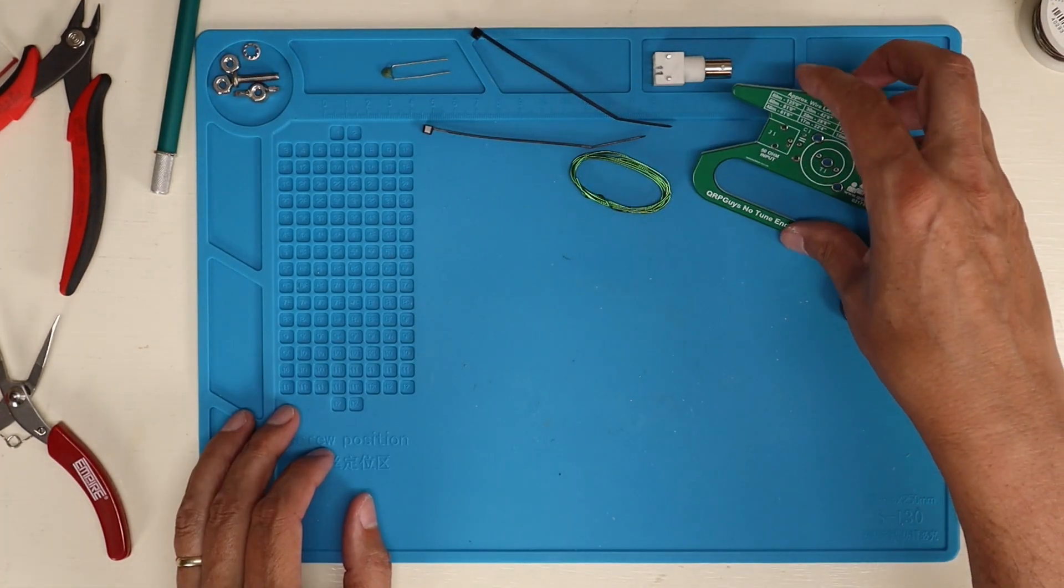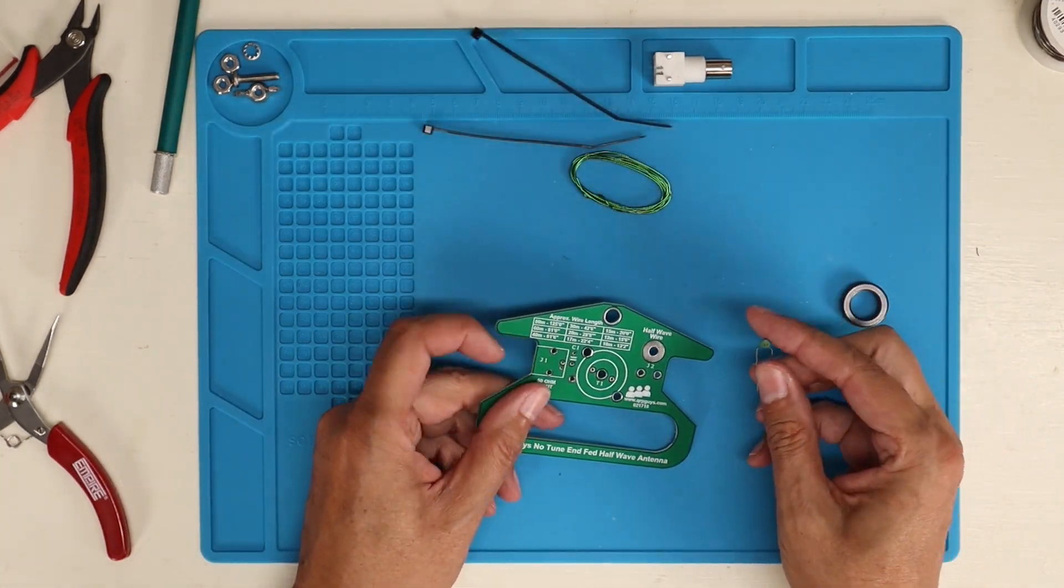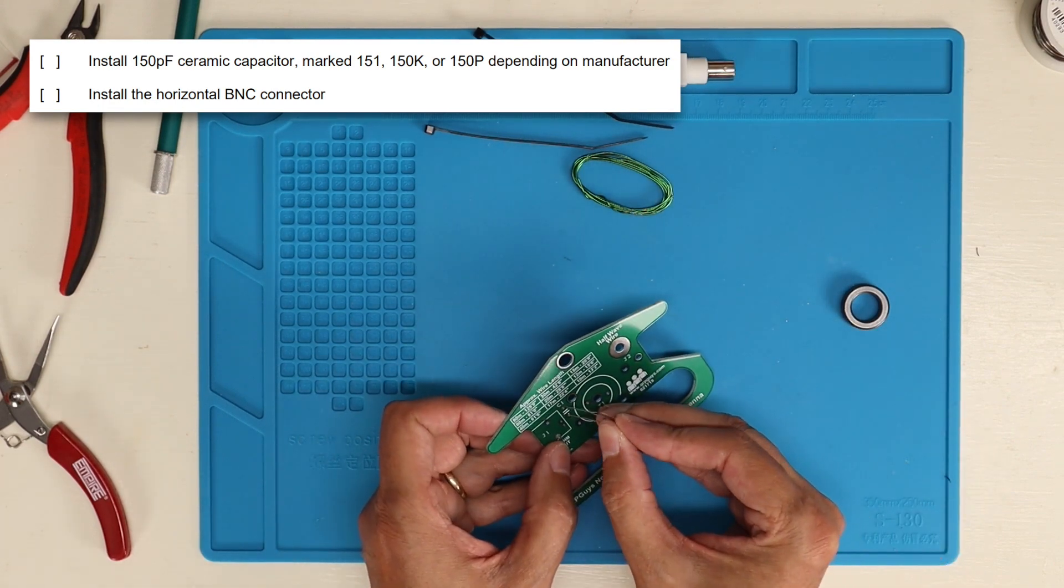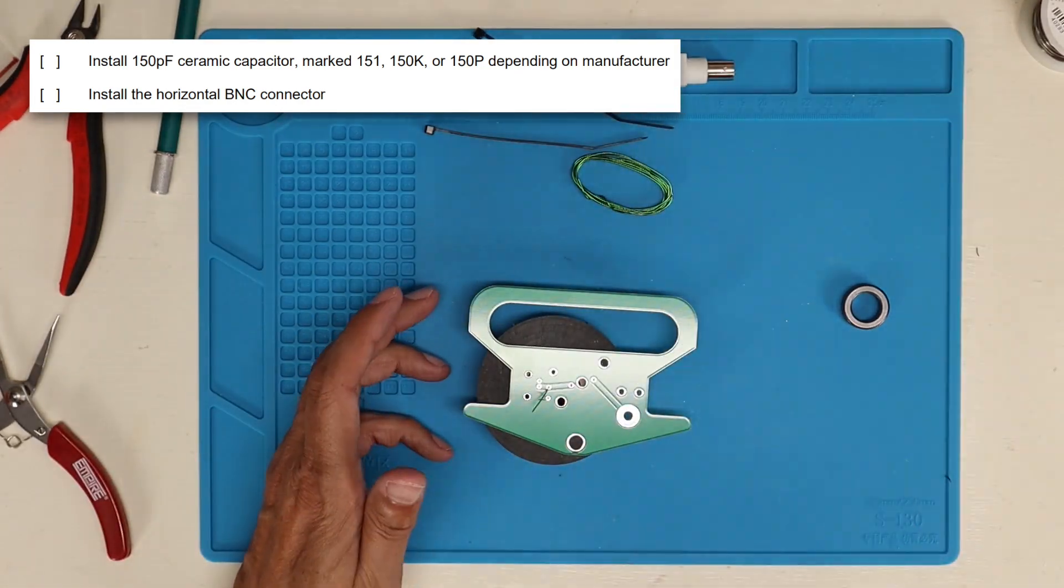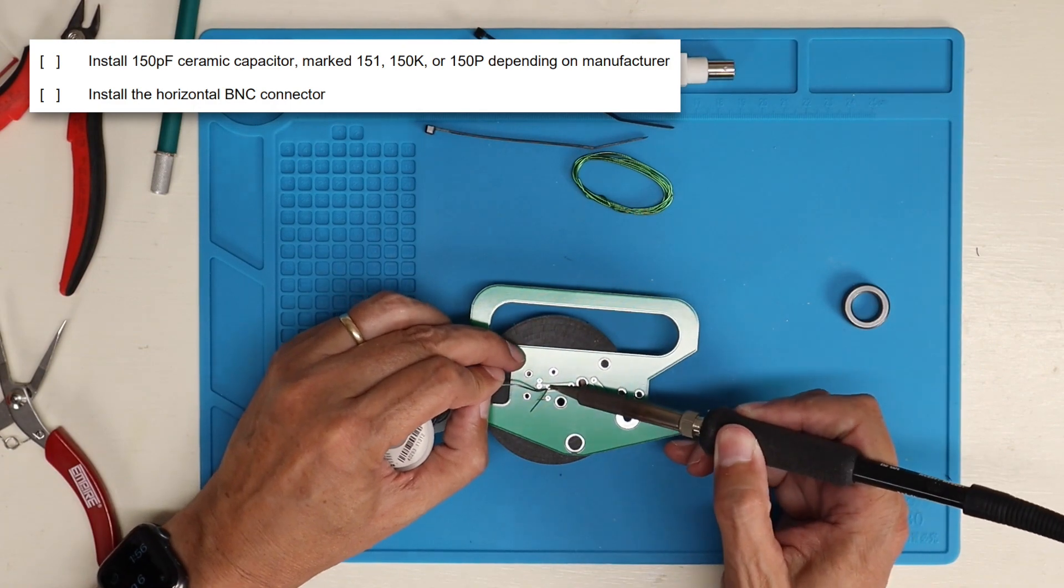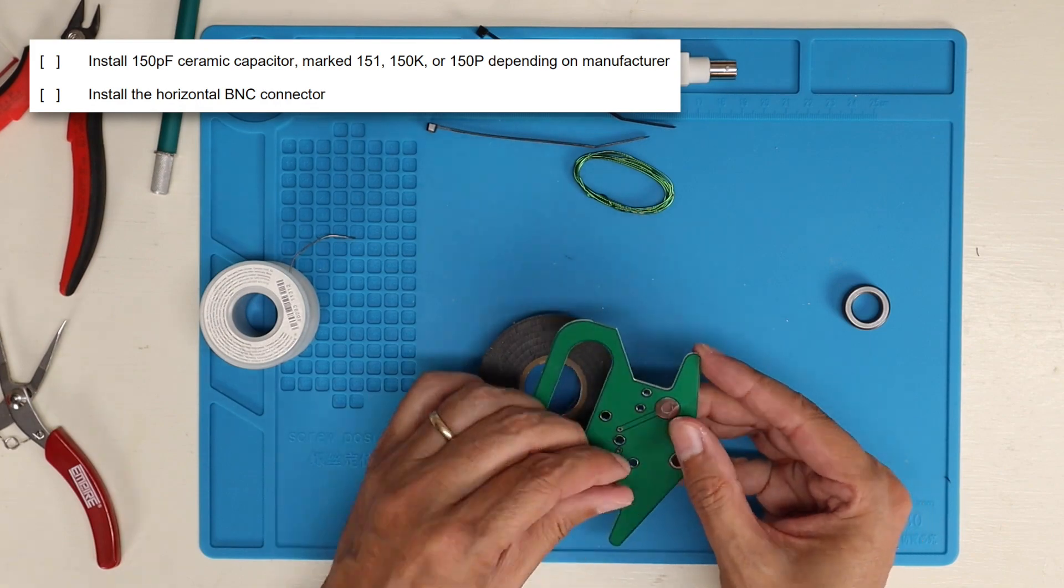So the first thing we're going to do is mount the 150 picofarad capacitor into the C1 position. You'll notice I've sped up the video during most of these build processes. No use boring you to tears watching every step take the full amount of time. Some of these steps, like particularly toroid winding, is kind of like watching paint dry.